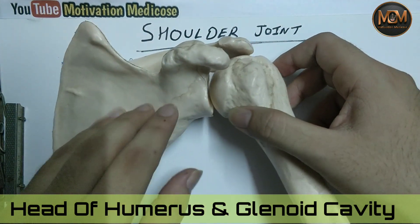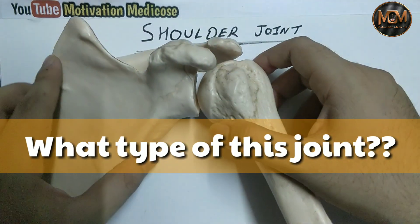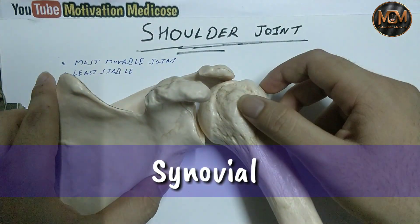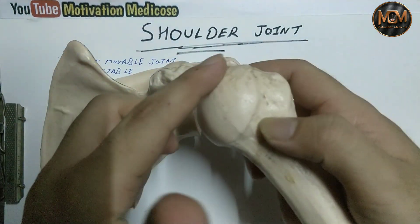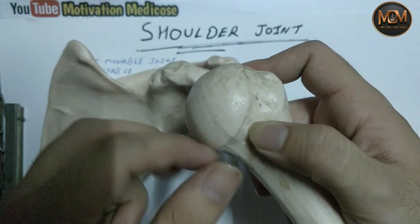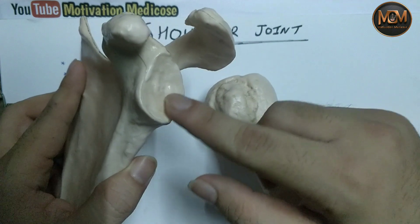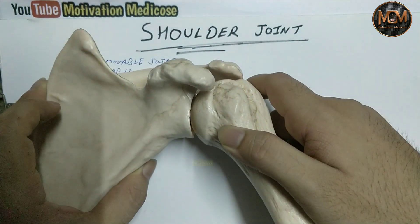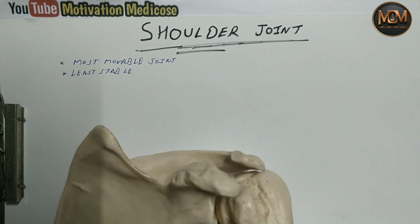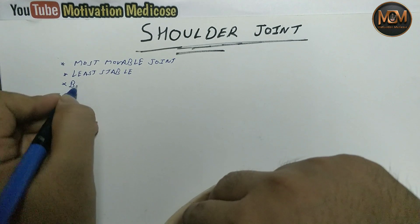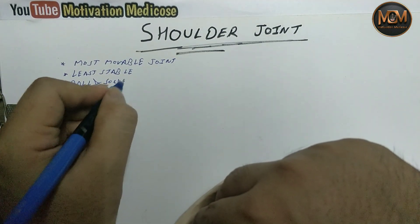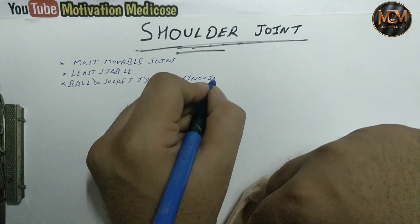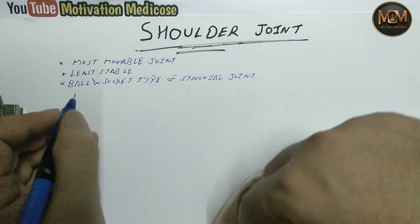This is a movable joint, which means it is a synovial joint. What type of synovial joint? As you can see, the head of humerus is round — ball-like. The glenoid cavity looks like a socket. So this joint is a ball and socket type of synovial joint.